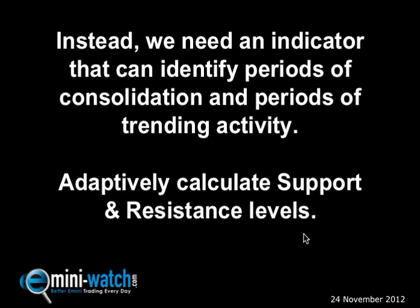The problem is instead of trying to find this ultimate moving average, what we should be looking for is an indicator that tells us what kind of activity the market is going through. If the market is trending, a moving average will be fantastic. But when the market is not trending and it's consolidating, the moving average will be horrible. You need an indicator that tells you which kind of activity the market is in so you can apply the right analysis — in effect, calculating support and resistance levels adaptively, because once you break out of a support or resistance level, that's when you move into a trending period.